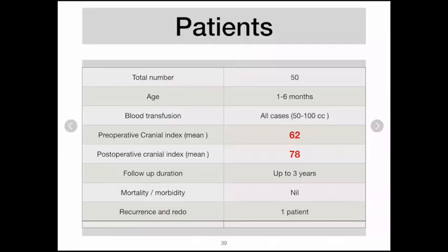All in all, we have done 50 patients — actually more — with ages varying from one month to six months. One drawback of our technique is that we had to give blood transfusion in all cases, not large amounts — somewhere between 50 to 100 cc. The mean preoperative cranial index was 62 and postoperative was 78. Normal is around 80, so we are close to normal. Follow-up duration is up to three or four years. We have no morbidity, and recurrence requiring a redo in only one patient.